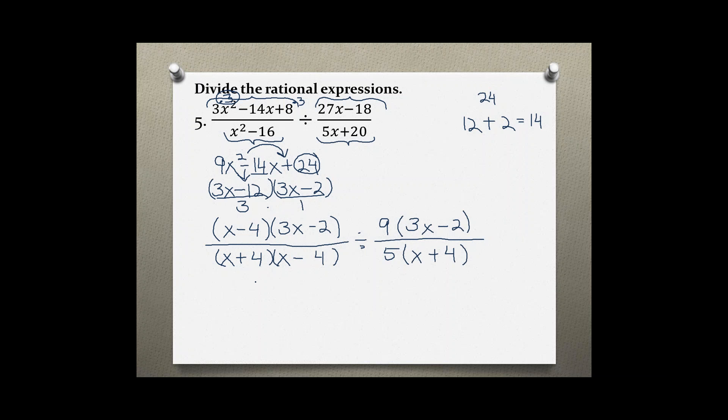There's nothing else I can factor, so now I'm just going to rewrite my problem. Keep the first fraction: (x minus 4)(3x minus 2) over (x plus 4)(x minus 4). Change the sign to multiplication and then flip the second fraction. So 5(x plus 4) is now on top and 9(3x minus 2) is in the bottom.